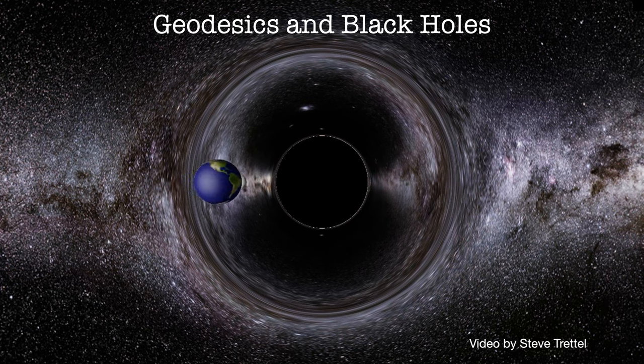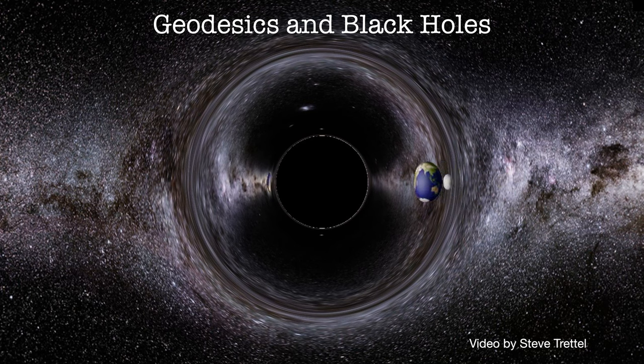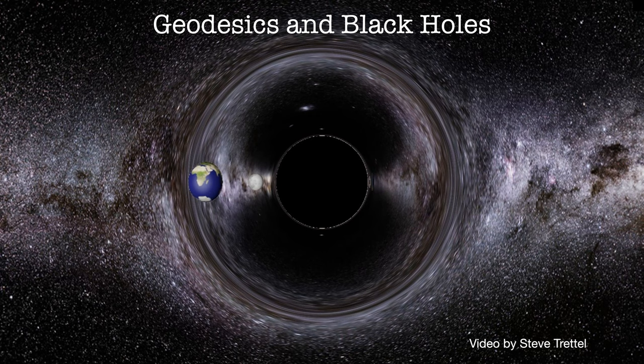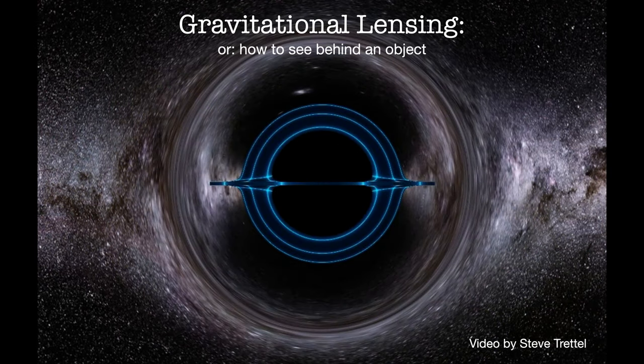As the earth and moon pass in front of the black hole, everything appears as they would in Euclidean space. But when they pass behind the black hole, we see something really interesting. What we see is the earth and moon break up into concentric rings around the event horizon. What's going on with those rings?